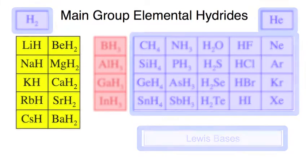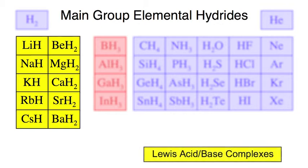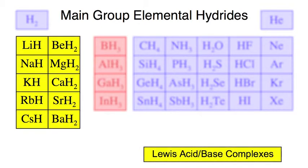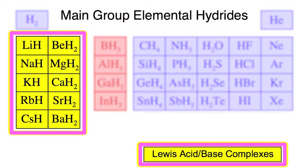To the left, we find the saline hydrides: lithium hydride, sodium hydride, calcium hydride. These are Lewis acid-base complexes. For example, sodium hydride is Na+ H−.